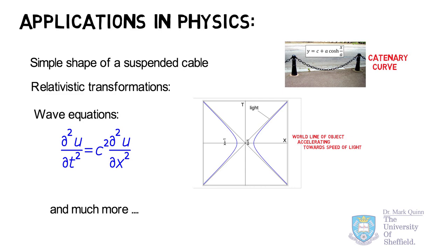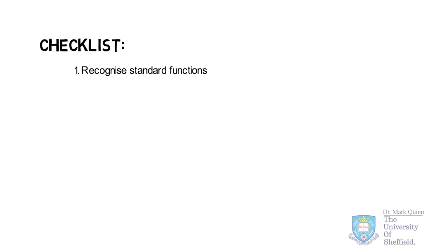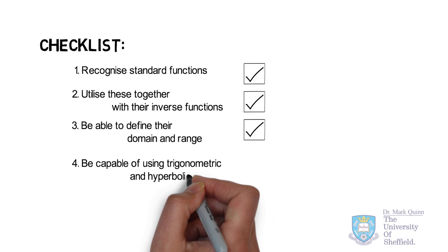Finally, let's summarize what we've covered in this video. We've learned to recognize standard functions and utilize them together with their inverse functions. We should now be able to define the domain and ranges of these standard functions, and be capable of using trigonometric and hyperbolic identities. Please continue to use your textbook and study for more details.